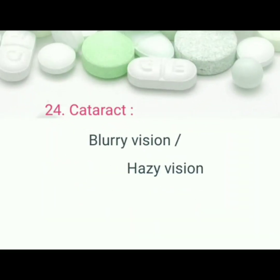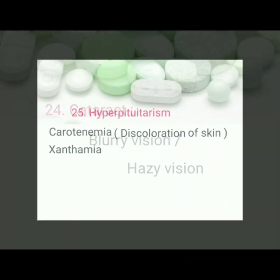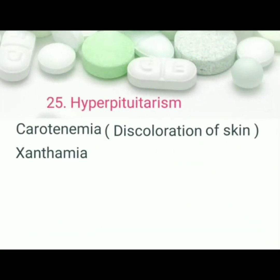Cataract: pathognomonic sign is blurry or hazy vision. Hyperlipidemia: pathognomonic sign is xanthemia, discoloration of skin, xanthoma.